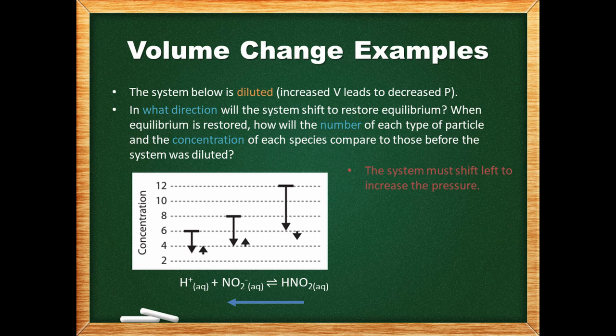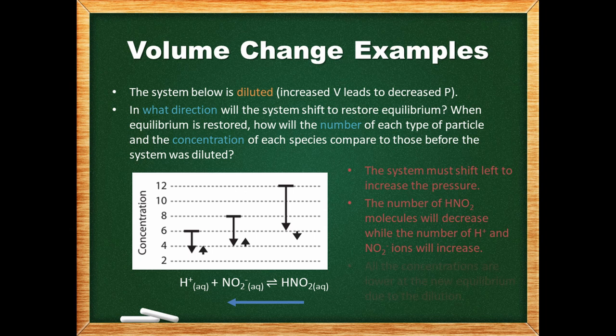The system was diluted, so only the system's response to the stress — and not the stress itself — changes the number of particles. A shift left increases the number of hydrogen and nitrate ions and decreases the number of nitrous acid molecules. On the other hand, the stress itself changes the concentrations. Since the system was diluted, all the concentrations are lower at the new equilibrium.